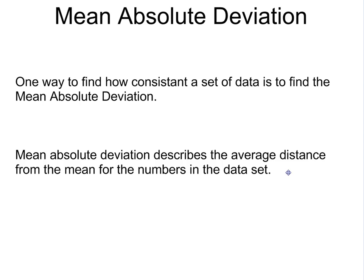This is a review of mean absolute deviation. One way to find out how consistent a set of data is is to find the mean absolute deviation. Mean absolute deviation describes the average distance from the mean for the numbers in the data set.